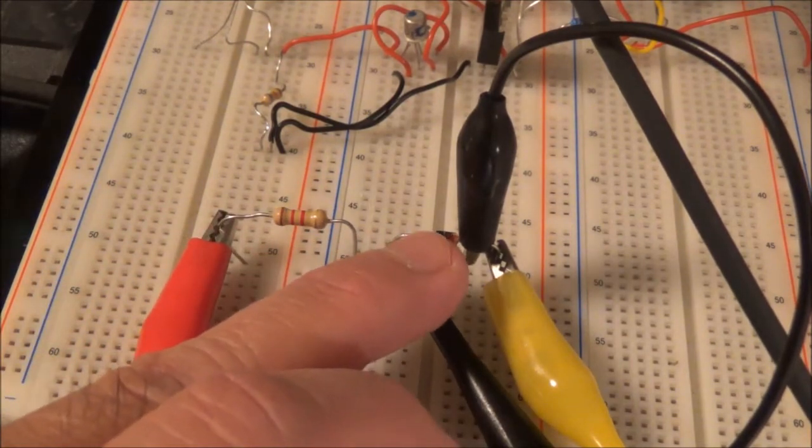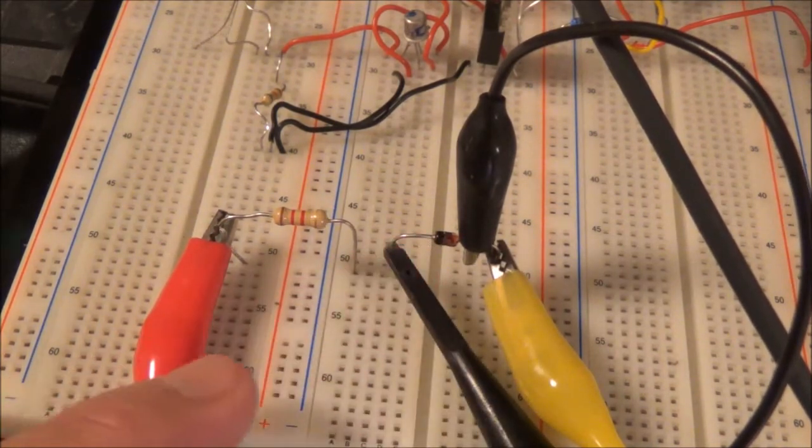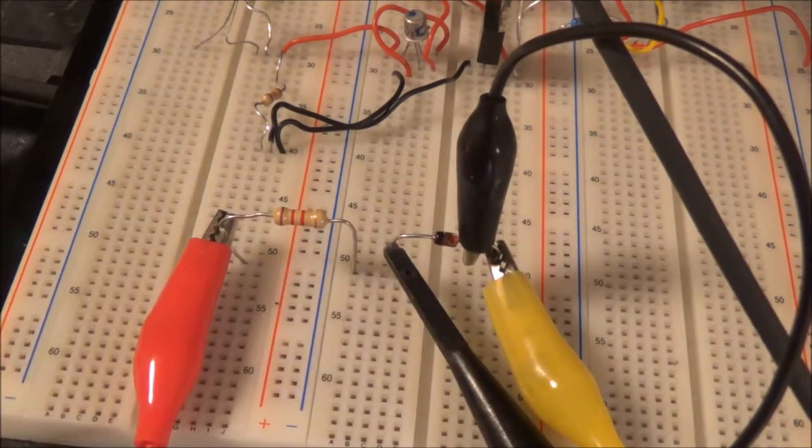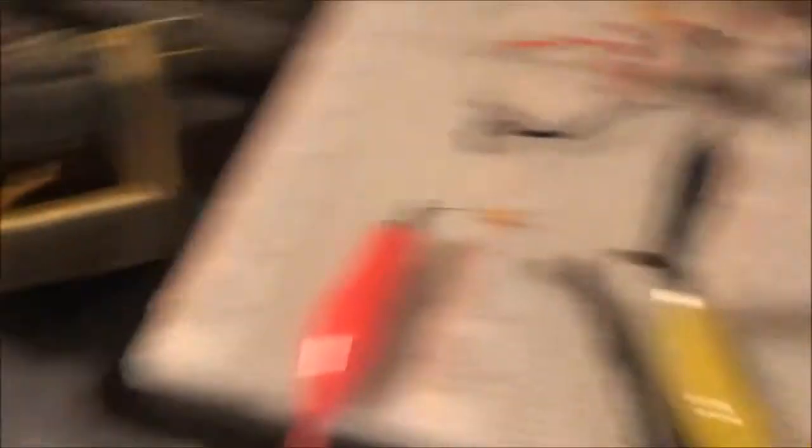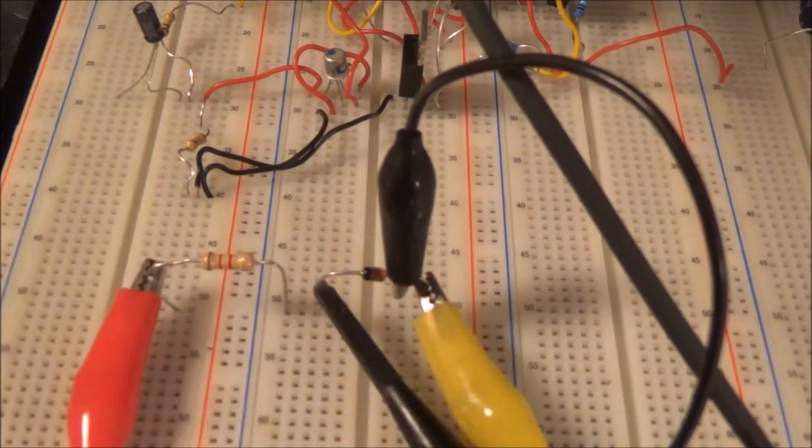The Zener diode itself is a 5.1 volt Zener diode. These two alligator clips are coming from the transformer, and the oscilloscope is across the Zener diode.